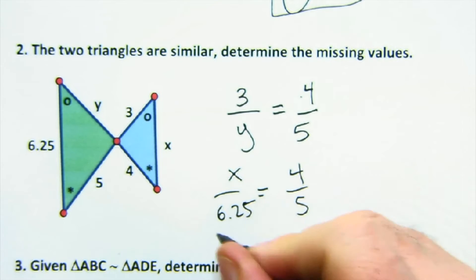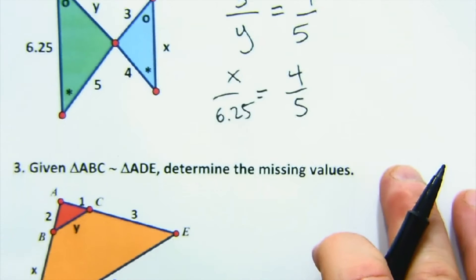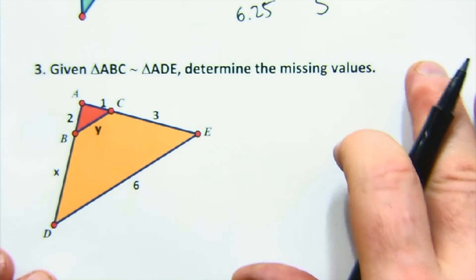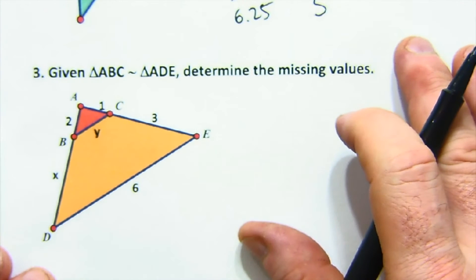And then again, cross multiply and solve. Be very careful, obviously, about looking carefully at the angles and those types of things.